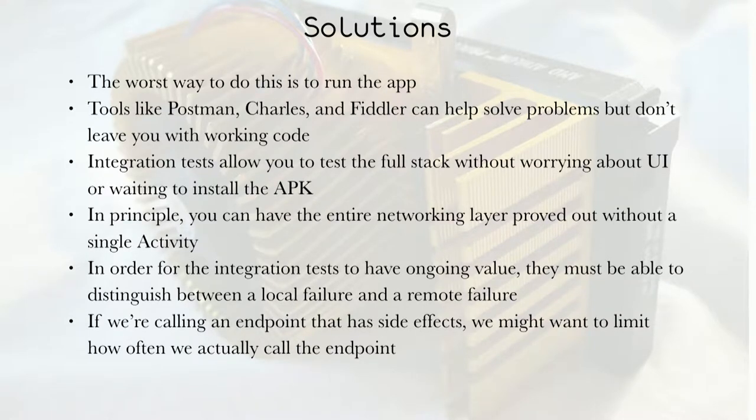And then every time I make a change, I have to build, deploy, go through everything. Then Postman came out. And Postman's great. I certainly advocate the use of Postman. But when I'm done with Postman, it'll export some Java for me, but I don't have working code in my app that will do the same thing. Charles and Fiddler are helpful too. But again, my goal is to end up with working code at the exact same moment that I get the call to the backend working.